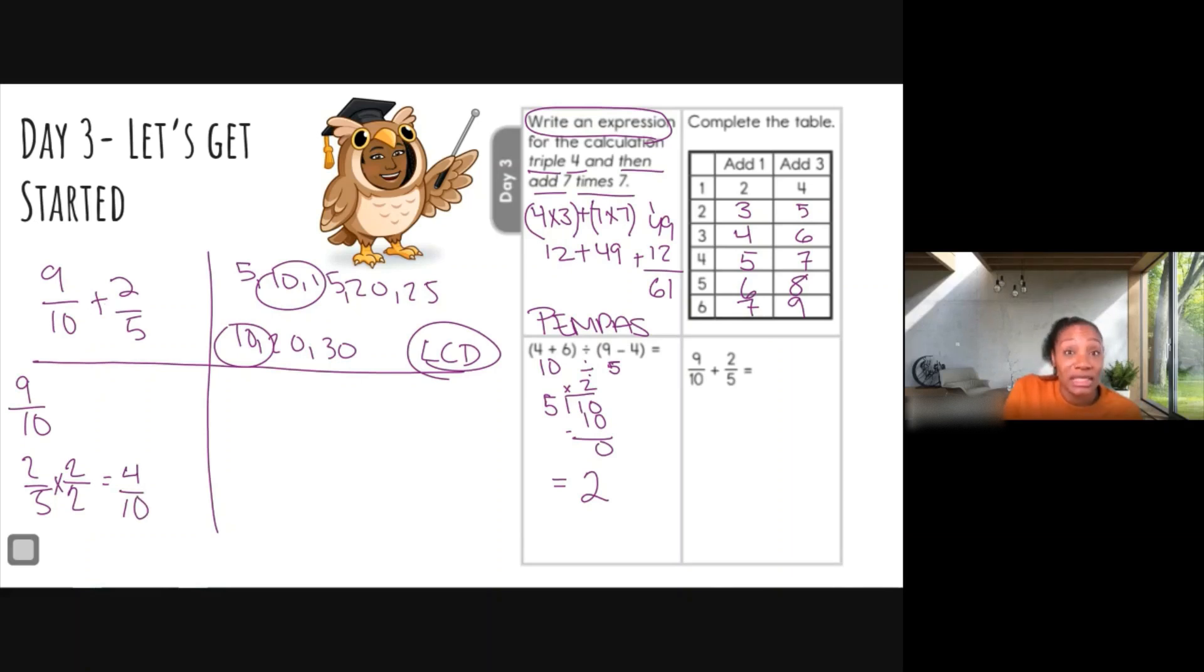Now don't forget, our original problem was an addition problem, so we still need to add here. So we have four-tenths and we're going to add straight across, and we're going to get nine plus four: nine, ten, eleven, twelve, thirteen. Oh my goodness.